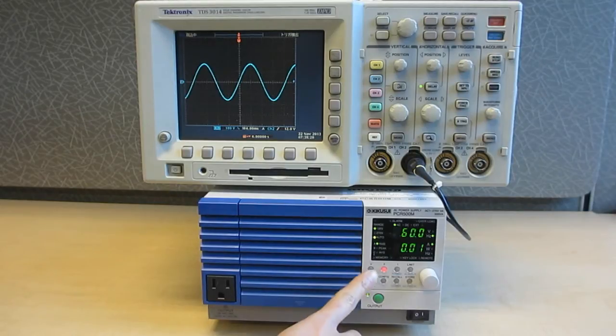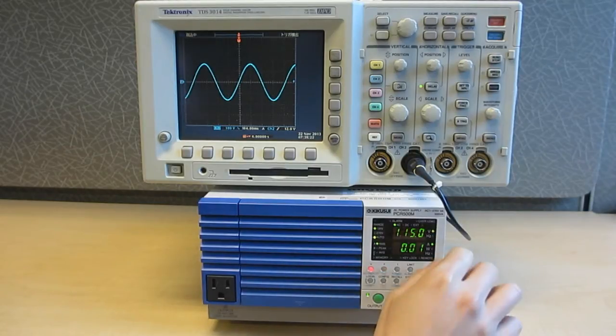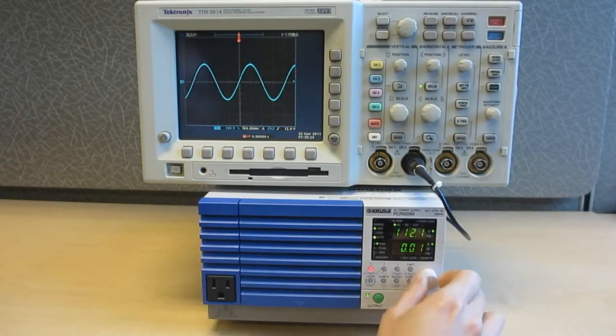Now we can also vary the output voltage and frequency around these levels for margin testing. These can be seen changing on the oscilloscope.